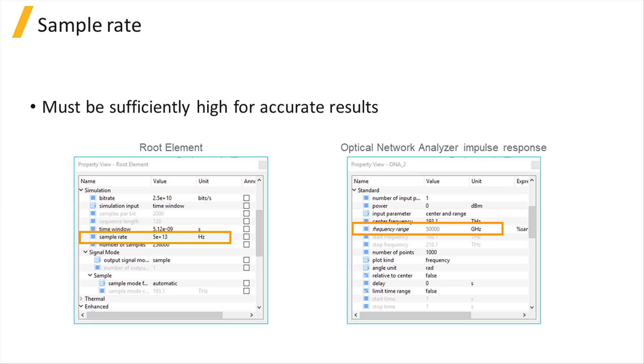For optical and electrical sources, it is recommended to inherit the sample rate from the root element, as was discussed in the Time Domain Simulation Setup Sources unit. For impulse response simulations with the Optical Network Analyzer, the sample rate is defined by the Frequency Range property.